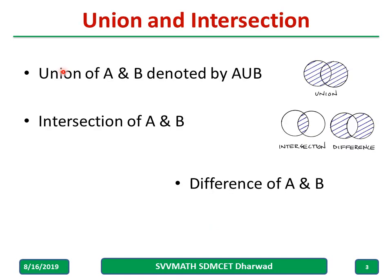The union of A and B is denoted like this, and all of us know what union means. Similarly, the intersection is represented like this, and the difference between A and B — considering sets A, B, and their intersection — the difference A minus B is what we have.